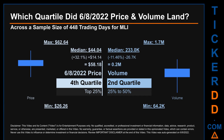Hello, my name is Maria. Which quartile did the June 8, 2022 price and volume land in, across a sample size of 448 trading days? The maximum end-of-day price for MLI was $62.64, while the minimum was $26.26. The June 8, 2022 price of $58.18 landed within the fourth quartile, meaning it was within the top 25% of all sampled end-of-day prices.